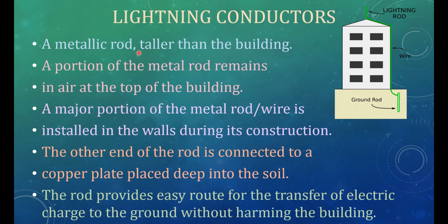Lightning conductors. Lightning conductor is a device used to protect buildings from the effect of lightning. A metallic rod taller than the building is installed in the walls of the building during its construction. The other end of the rod is connected to a copper plate placed deep into the soil. The rod provides easy route for transfer of electric charge to the ground without harming the building.